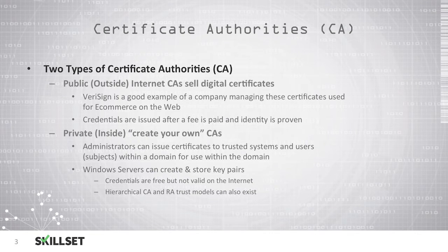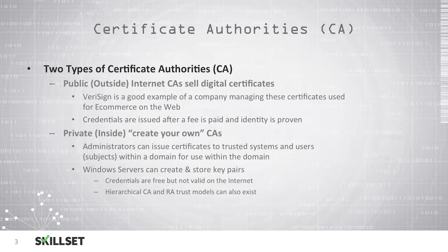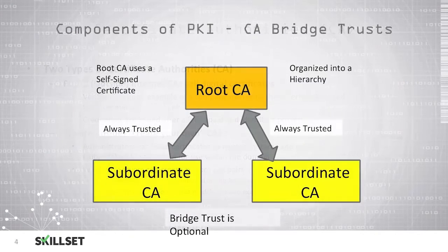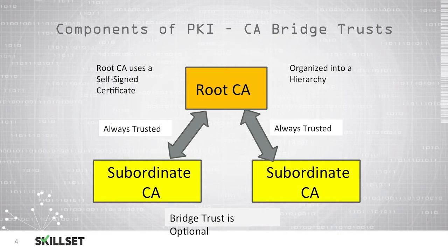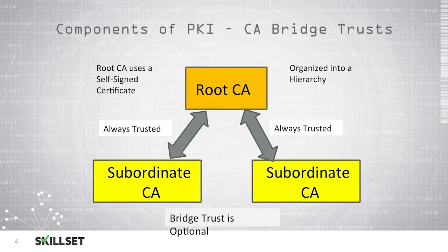We can have hierarchical certificate authority and registration authority trust models. In a private certificate authority environment with a public key infrastructure, we have our root certificate authority at the top of the hierarchy. The root certificate authority is the only entity that signs their own certificate. Subordinate certificate authorities have certificates signed by the root, and both always trust each other.